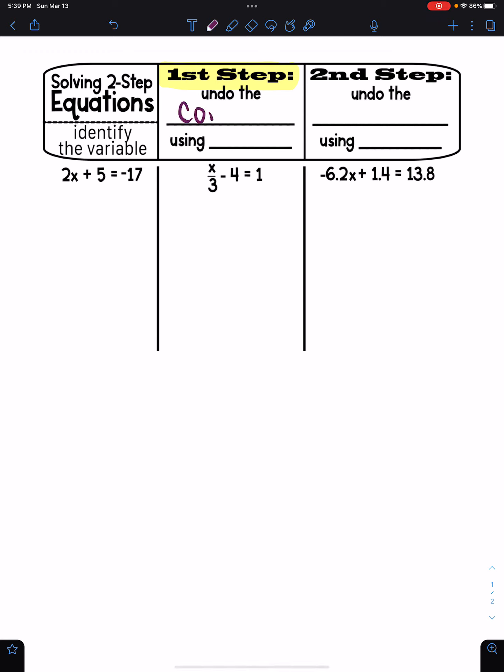And when we undo a constant, if you'll remember from our one-step equation notes, that's when we add or subtract both sides by the constant. And the second step is to undo the coefficient. And when we undo the coefficient, we undo that using multiplication or division.